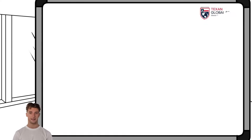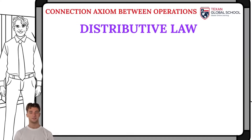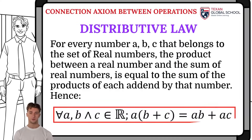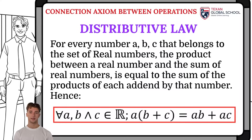The last axiom that we will analyze is the distributive law. It is an axiom of connection between addition and multiplication. It indicates that, for every number a, b, and c that belongs to the set of real numbers, the product between a real number and the sum of real numbers is equivalent to the sum of the products of each addend by that number.